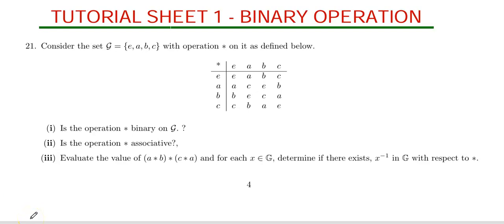Welcome to Siding Institute. In today's tutorial we are going to answer question one on tutorial sheet one, which is the last question in this tutorial. This question is on binary operations. The question reads: consider the set D = {e, a, b, c} with operation star on D as defined in the given table. Question one asks us to determine if star is binary on D.